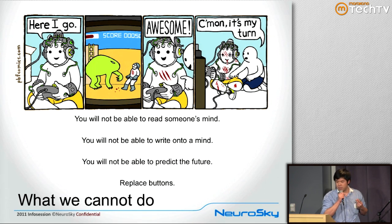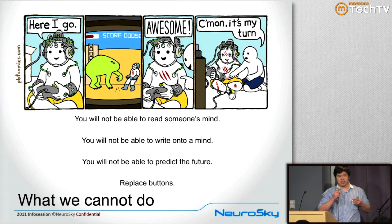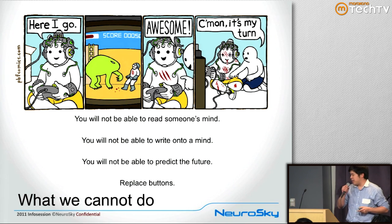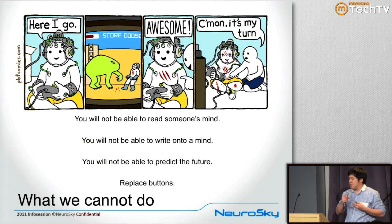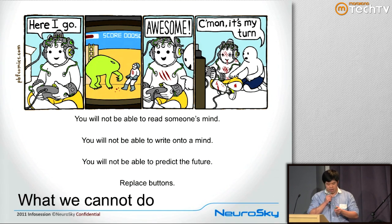You have these different brainwave bands — things known as delta, theta, alpha, beta, and gamma. In the past, you had to use a complete bucket full of sensors all over your head in order to read these brainwave states. What Neurosky has done is take that medical device technology and turn it into consumer device technology. What was previously a bucket full of sensors is now a single sensor on your forehead.